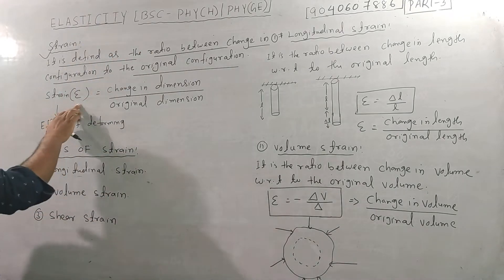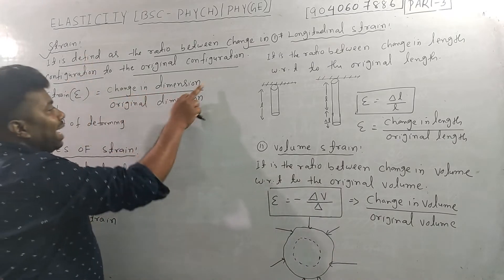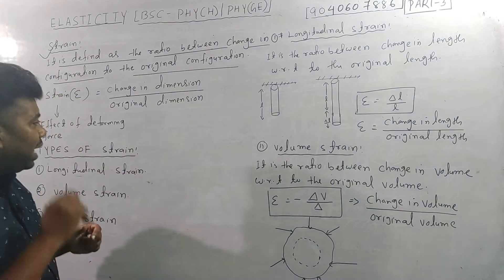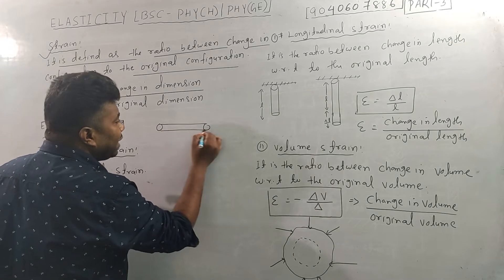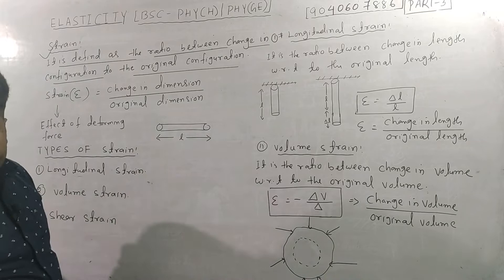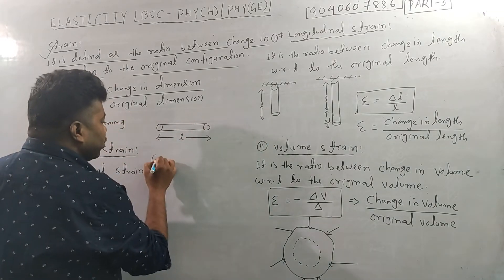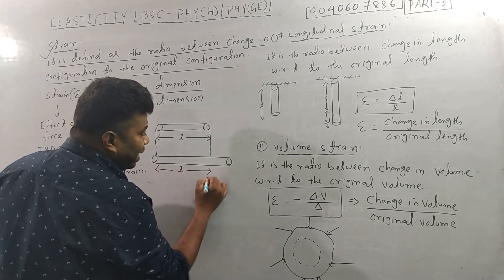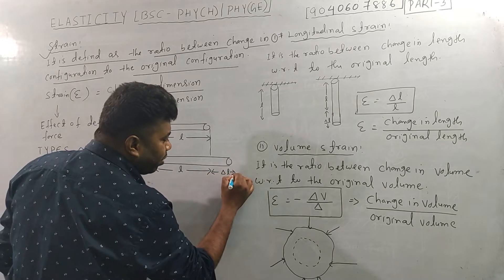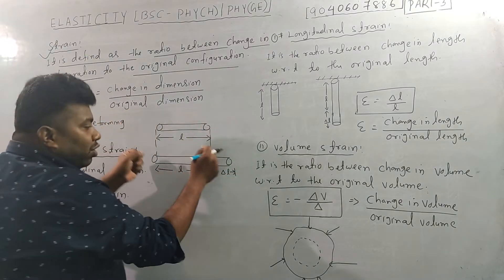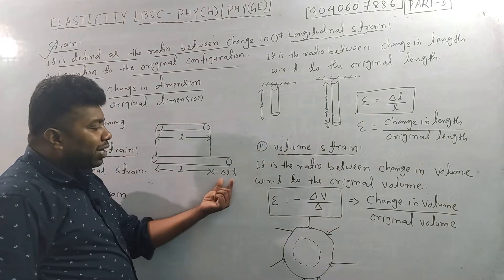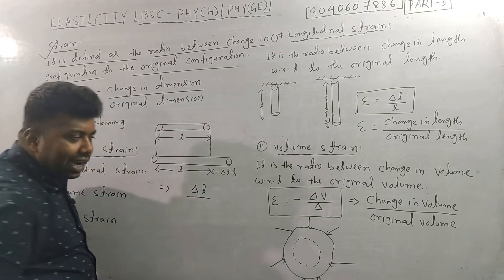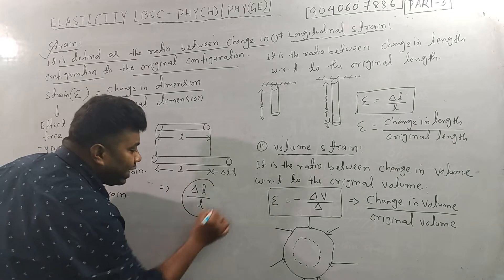We represent the strain formula as change in dimension with respect to the original dimension. It is very simple. There is a rod; the initial length is L. Now, we apply force to the length. There is some del L — a change in length. The change in dimension is del L, and L is the original dimension. So, del L by L is what we call the strain.